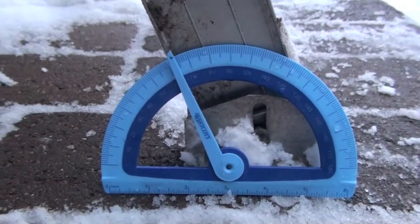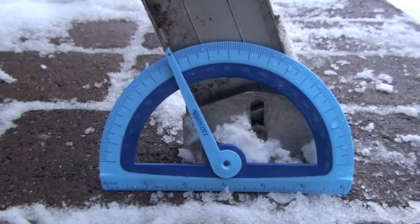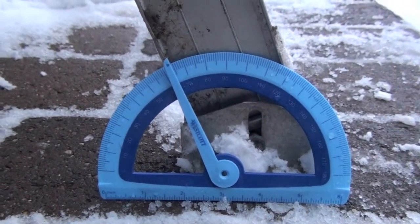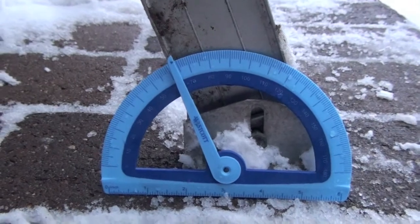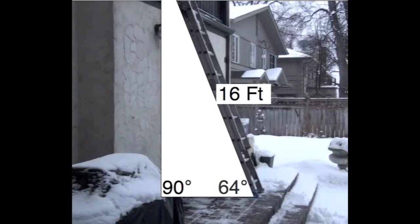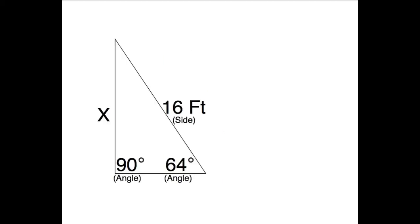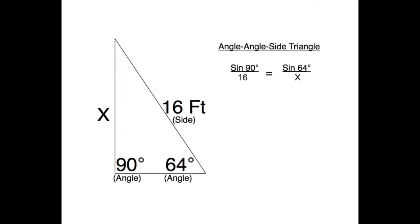Law of Sines! I measured the angle of the ladder to the ground and found that it was 64 degrees. I also know that the angle from my house to the ground is 90 degrees and that my ladder is 16 feet tall. Based on this information, I know that I am dealing with an angle-angle-side triangle.